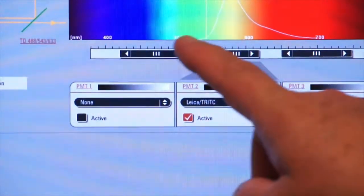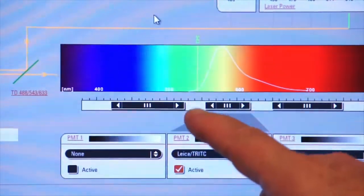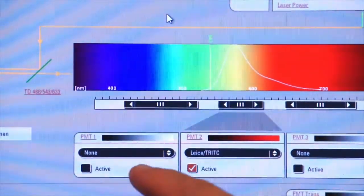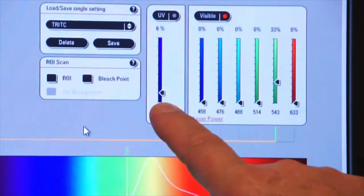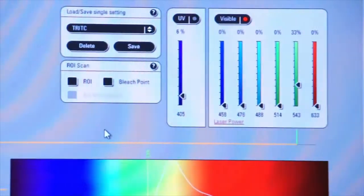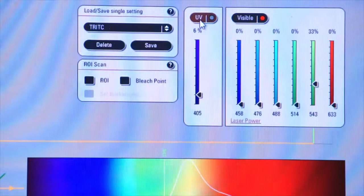I've turned off the FITC laser and the PMT, and now I'm going to turn on the UV laser. You'll see a line generated down here around 405, so I'll turn that on.